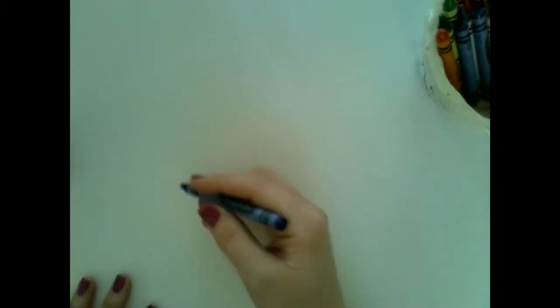So I want you to think really hard about shapes and lines that you want to use to create a city. I'm going to use a blue. I love blue. So I'm going to start with that.